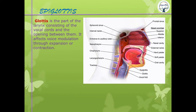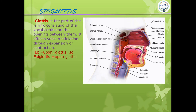The glottis is the part of the larynx consisting of vocal cords and the opening between them. The epiglottis is a structure present upon the glottis — epi means upon — and is attached to the tongue. When the tongue is pushed backward, the epiglottis closes the trachea, allowing food or bolus to enter the food pipe.